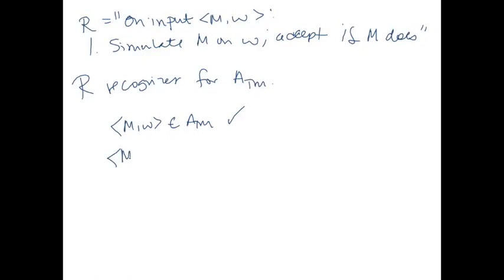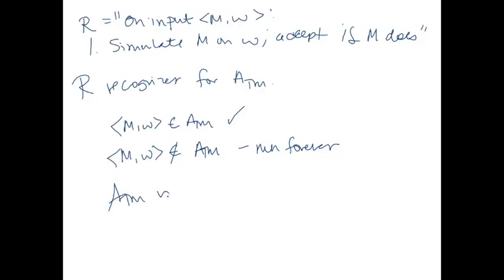Notice that we don't have to handle the case where MW is not an element of ATM — we can run forever. We could add that if M rejects W then reject, and if M runs forever on W then run forever. But because R is a recognizer, we don't really need to handle what happens if the string is not in the language. We only have to make sure that if the string is in the language, we do accept. So ATM is Turing recognizable — it's undecidable and Turing recognizable.